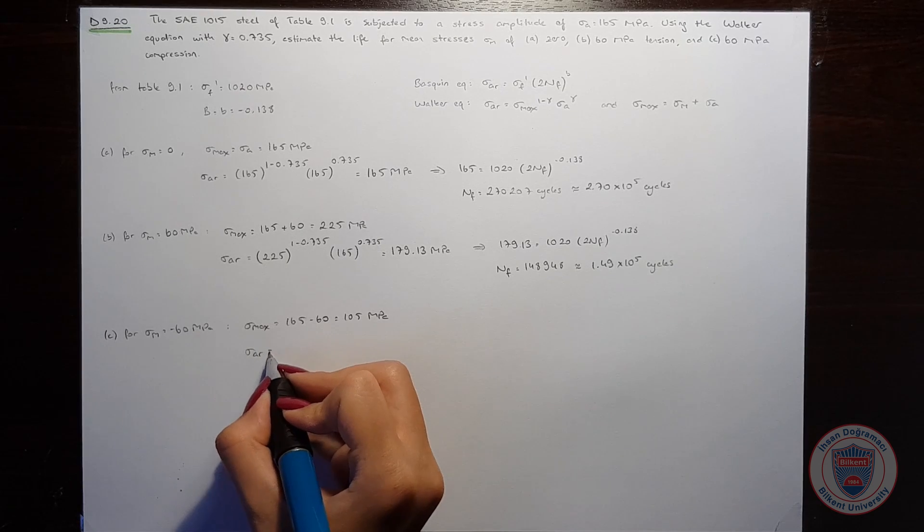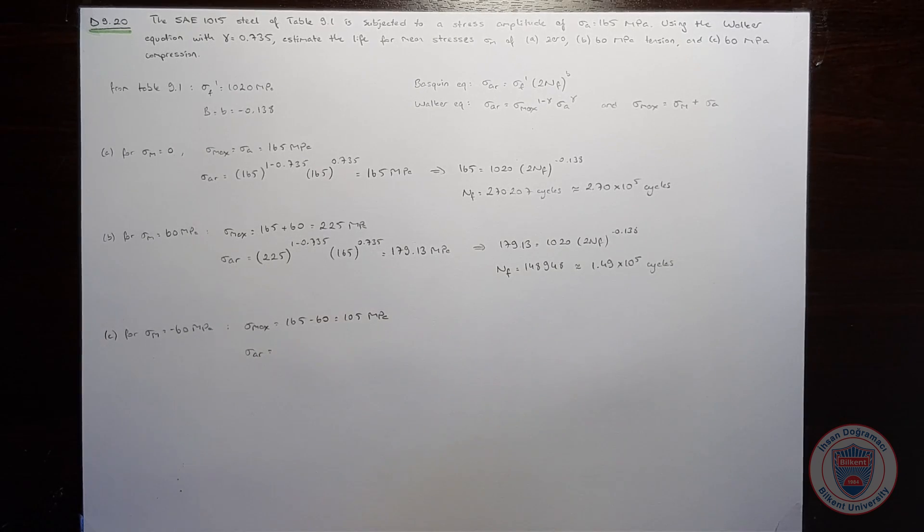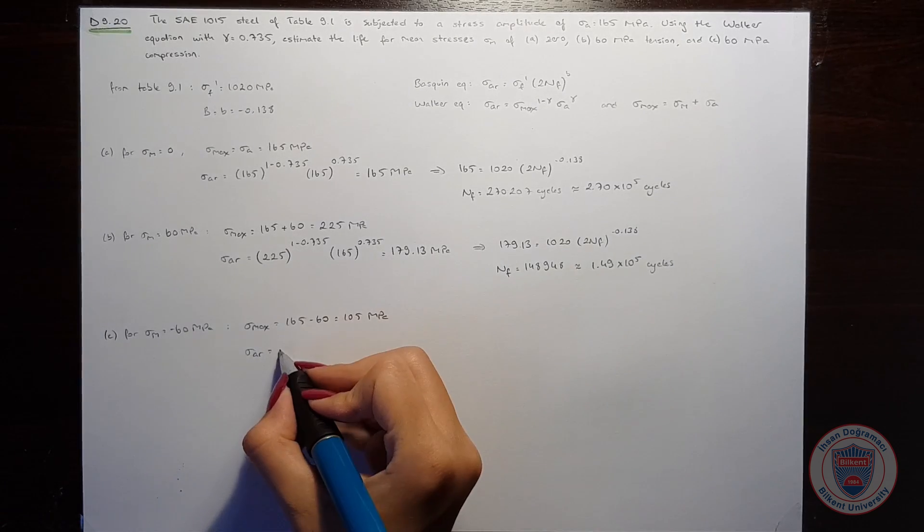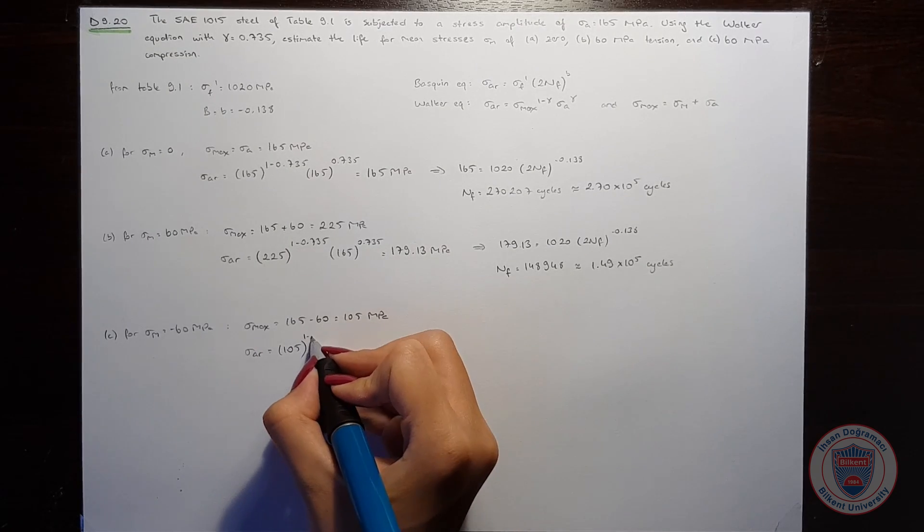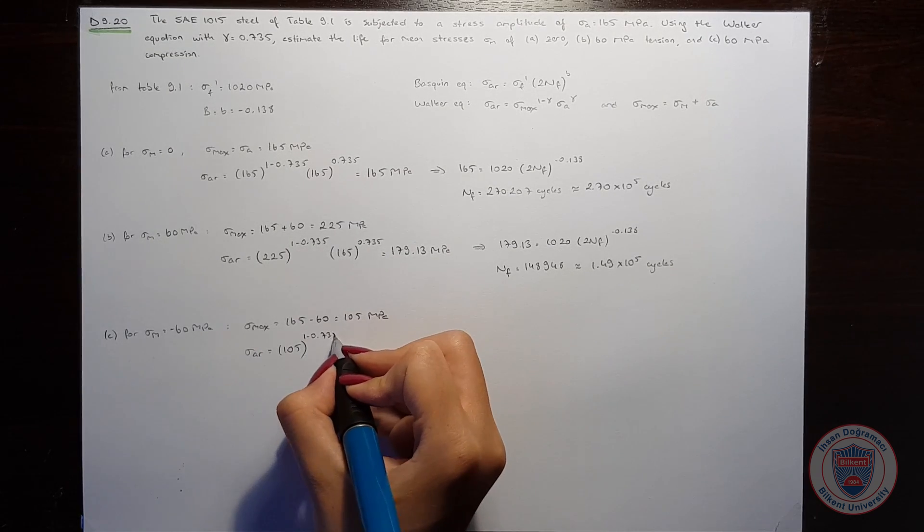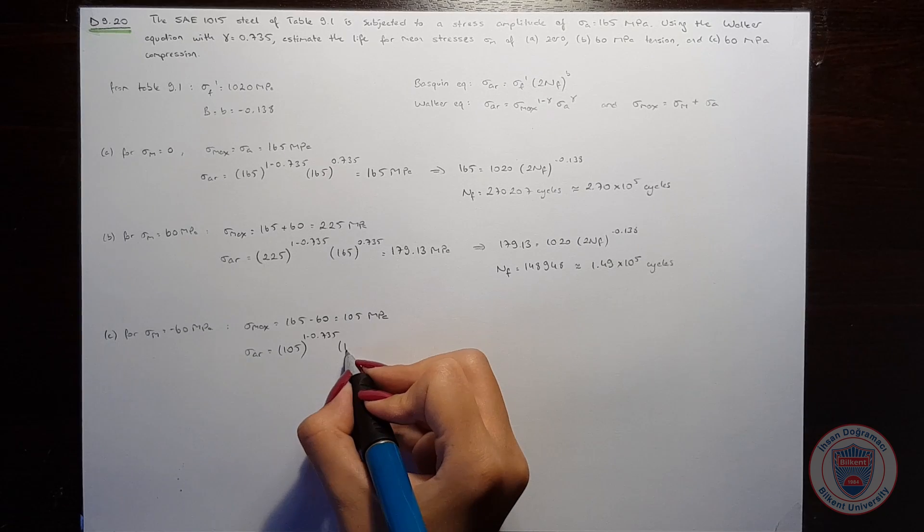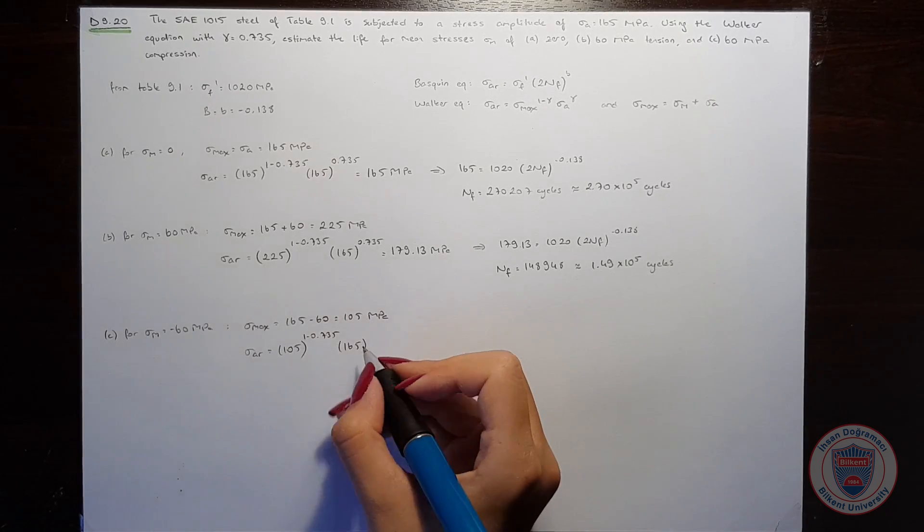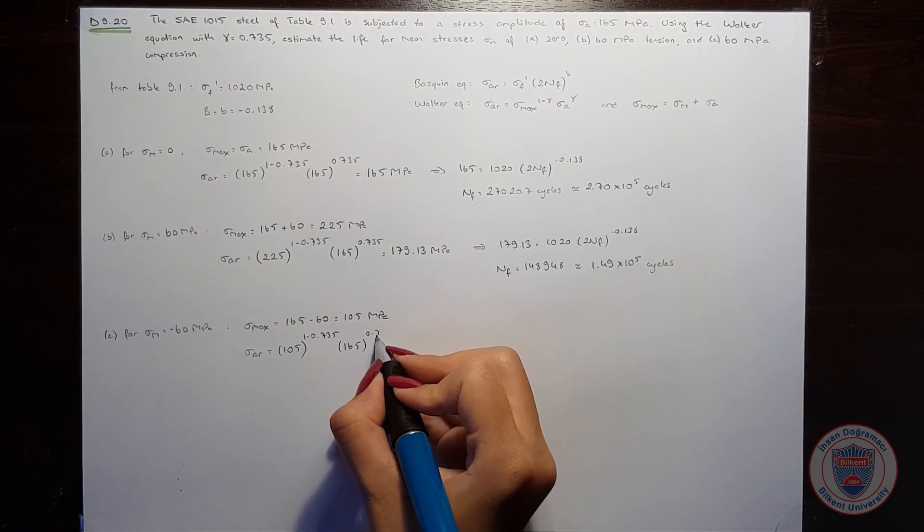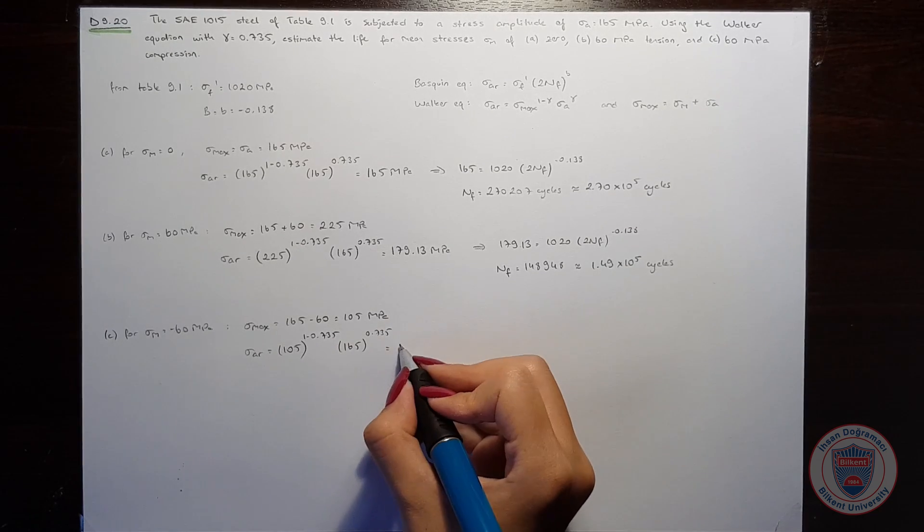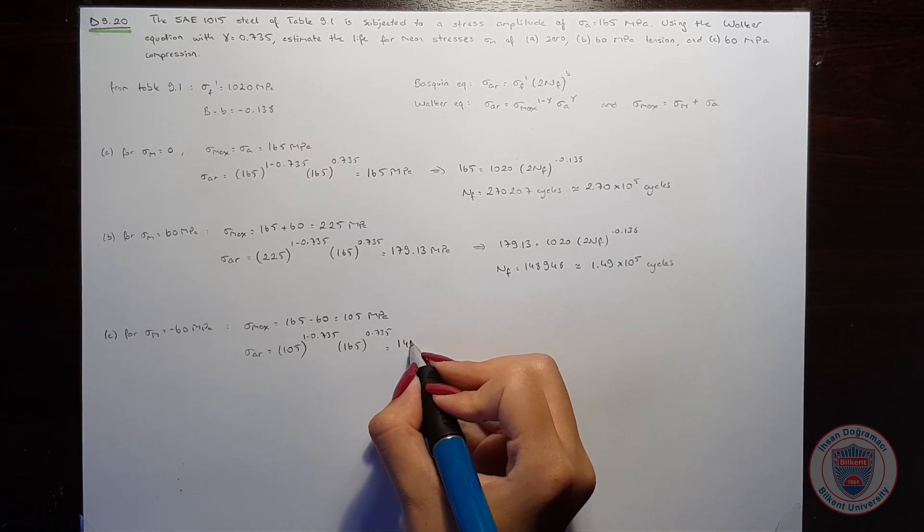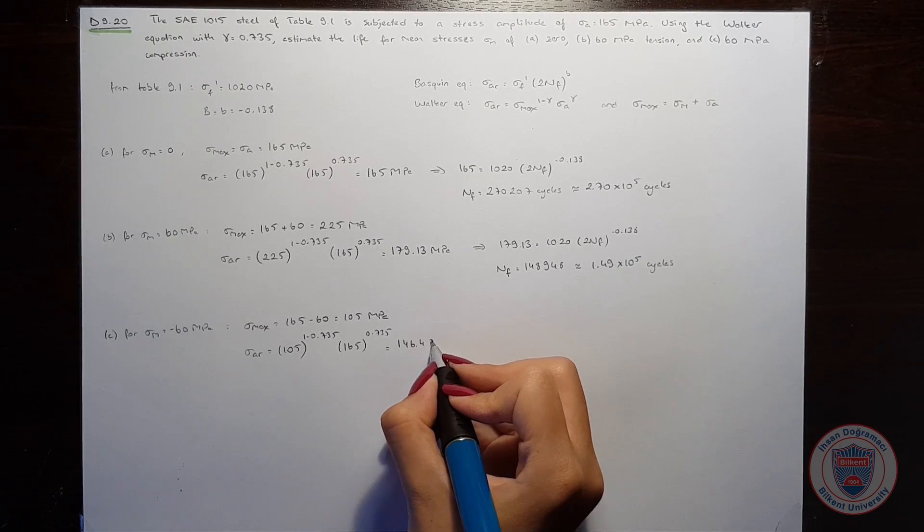Using the Volcker equation, sigma AR equals 105 to the power of 1 minus gamma times 165 to the power of gamma, which equals 146.4 MPa.